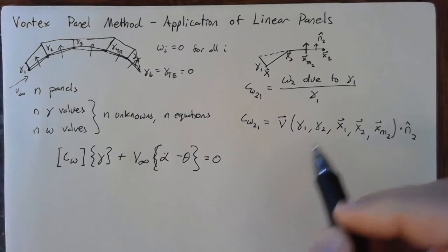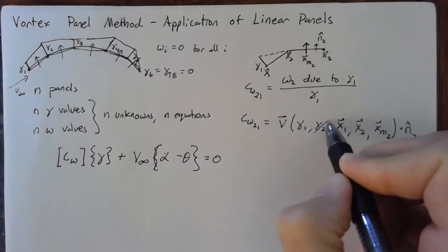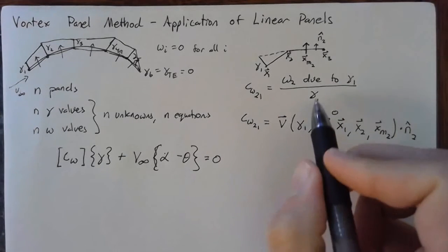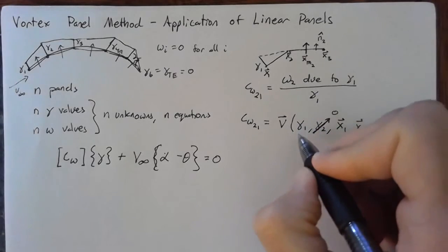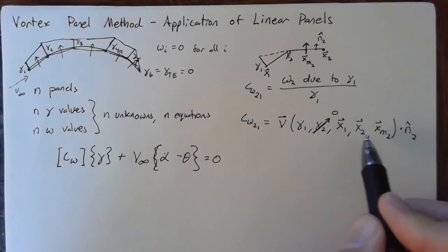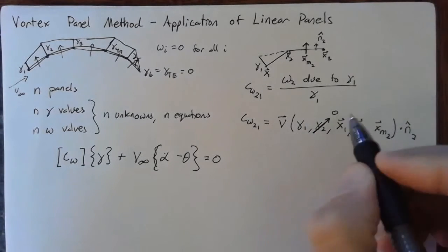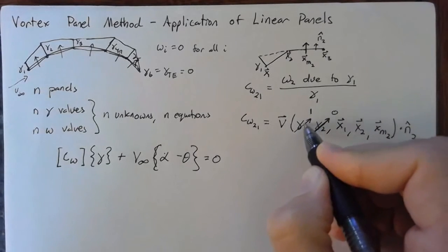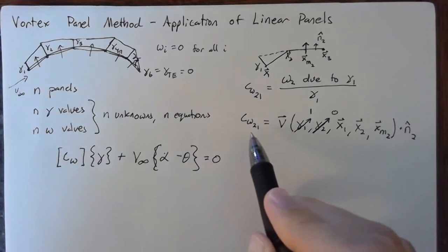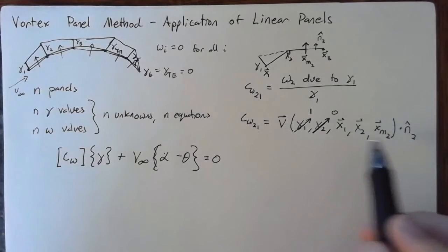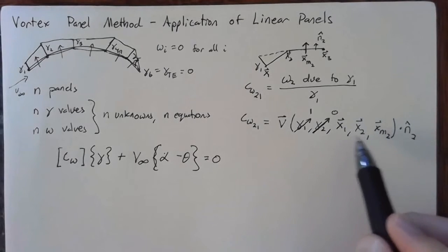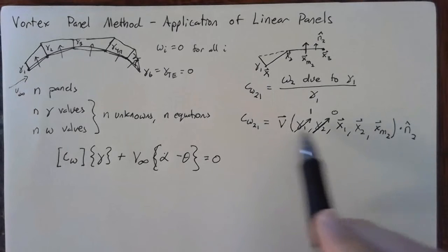Now, remember that we're saying that gamma 1 is present, but everything else is equal to zero. So we are neglecting the contribution of any gamma 2 at this point. And also, we're dividing by gamma 1. Well, our panel, or the velocity due to our panel, varies linearly with gamma 1. So if we divide by gamma 1, that's the same thing as setting this guy here equal to 1. So in order to find our upwash coefficient, we'll just plug in gamma 1 equal to 1, gamma 2 equal to zero, and then also all of our geometry into our linearly varying panel function.